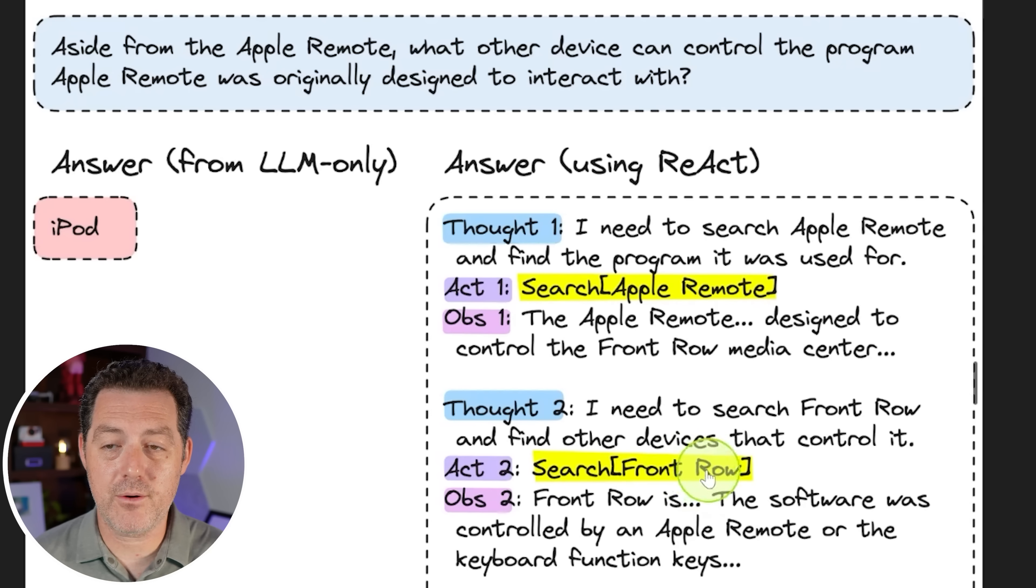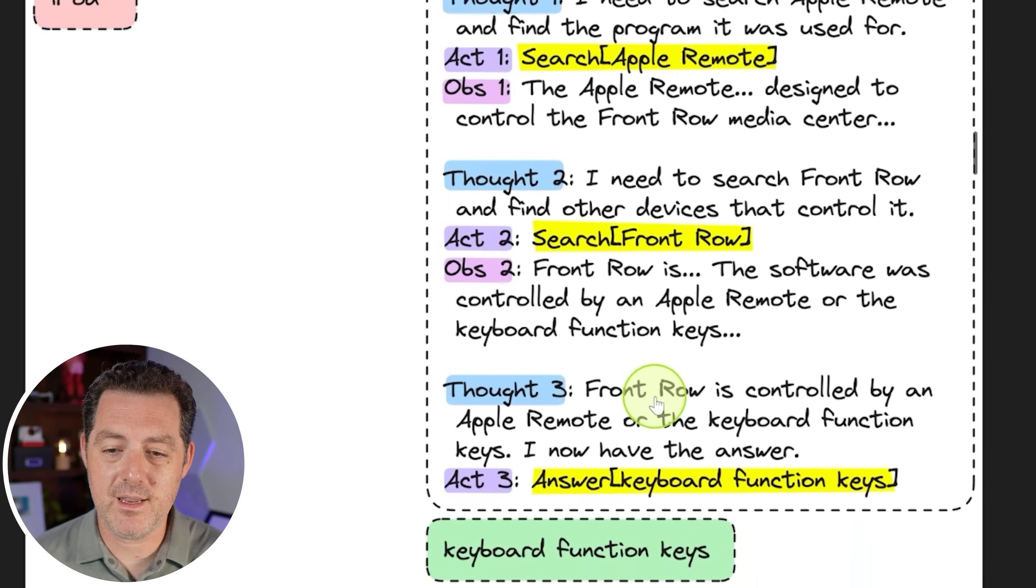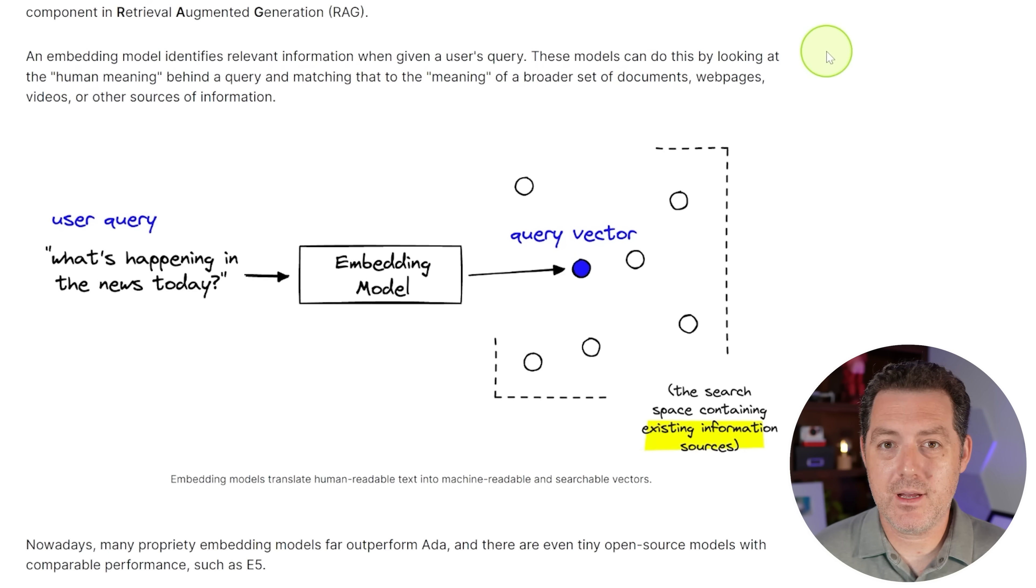So now search front row documentation. Then front row is—the software was controlled by an Apple remote or the keyboard functions. Then another one: front row is controlled by an Apple remote or the keyboard function keys. I now have the answer. Answer: keyboard function keys. So it was able to use a lot of different sophisticated tactics with this external knowledge source.